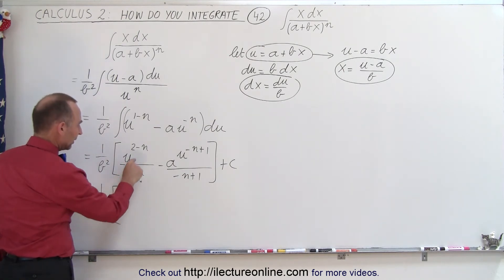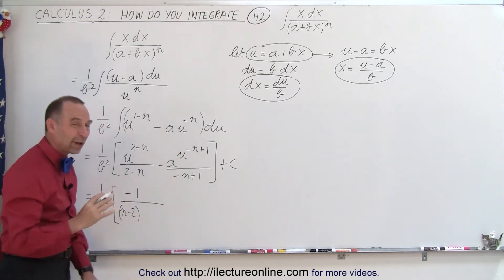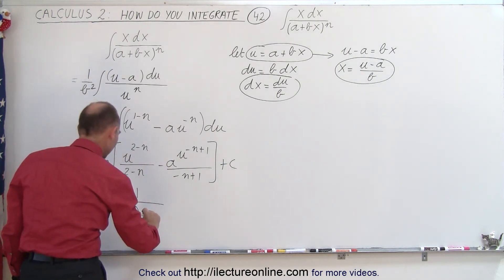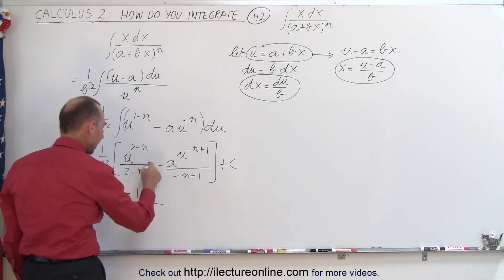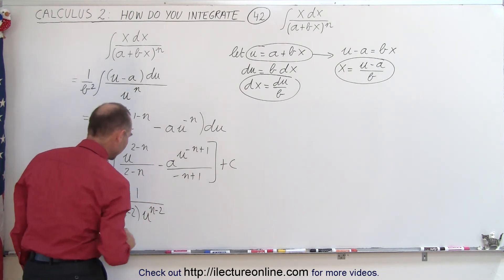So this becomes equal to 1 over b squared times, now I'm going to multiply this by negative 1 so I can switch this around. So we have a minus 1 divided by n minus 2, because that's the more typical way of writing that. And then when this comes to the denominator we can write this as u, and since we bring it down it changes the sign of the numerator of the exponent becomes n minus 2 as well.